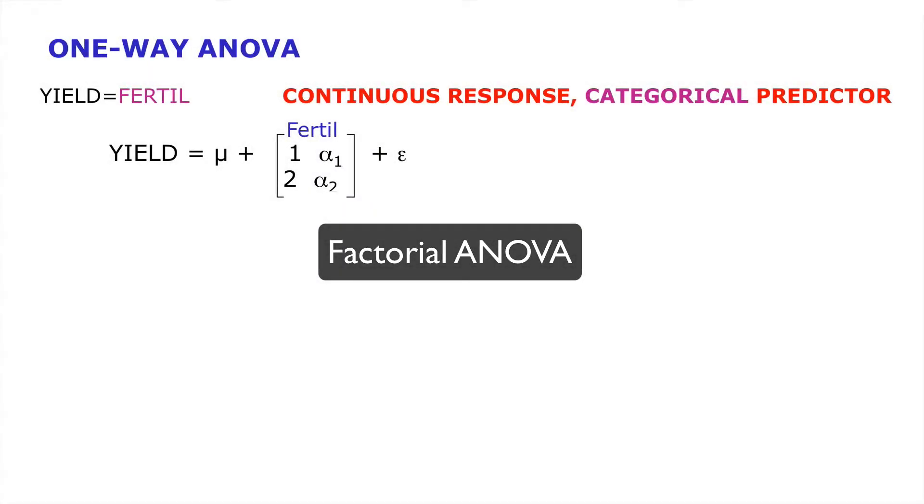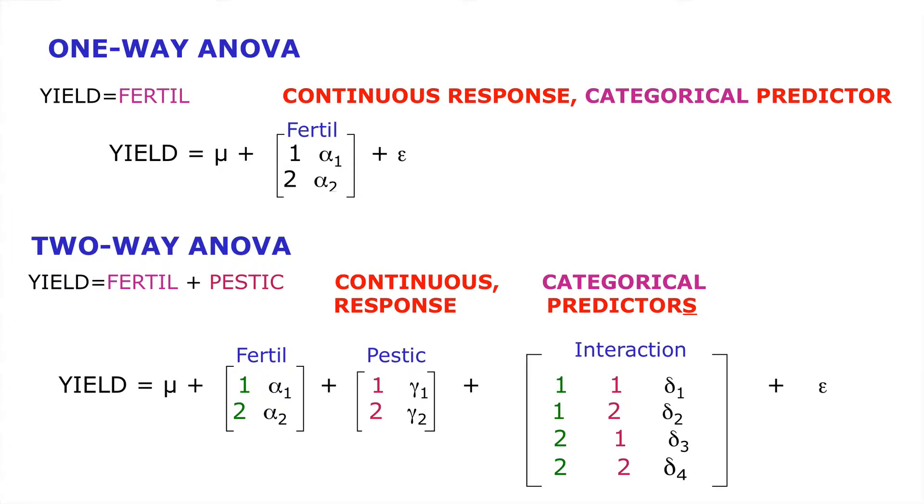In this short lesson we'll be looking at factorial analyses of variance. You'll remember that some time ago we looked at one-way analyses of variance where we have a continuous response and different levels of a single categorical predictor. We also went on to look at two-way analyses of variance where we had two categorical predictors and a continuous response.